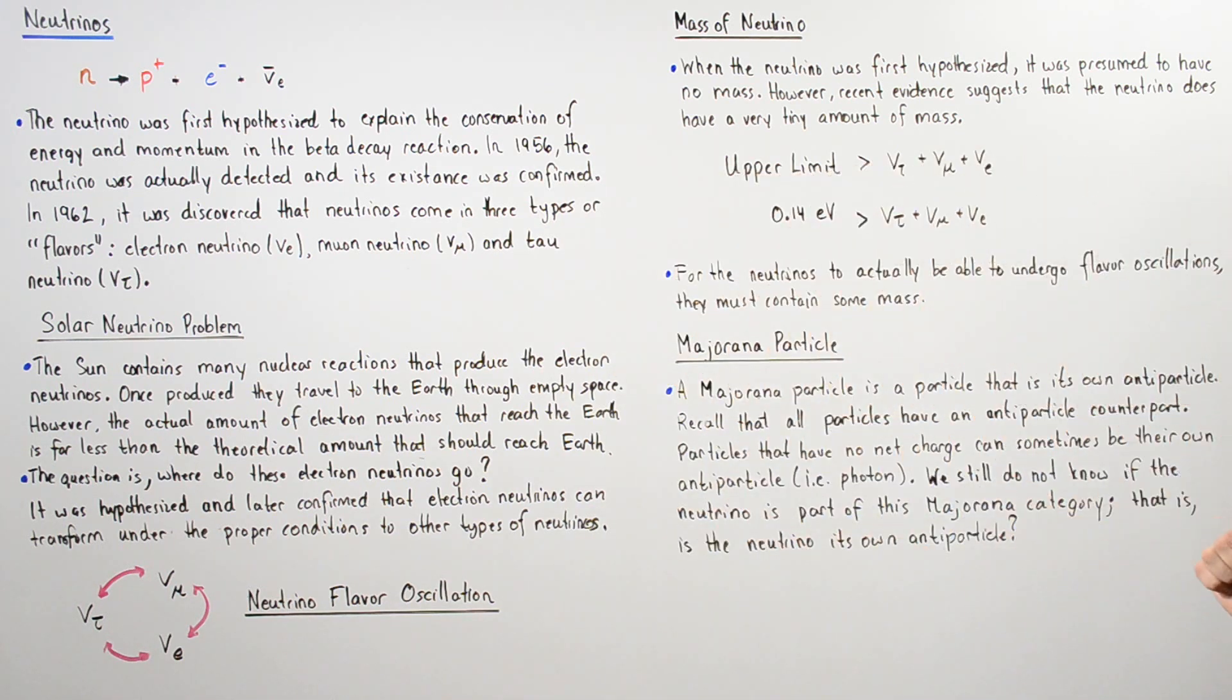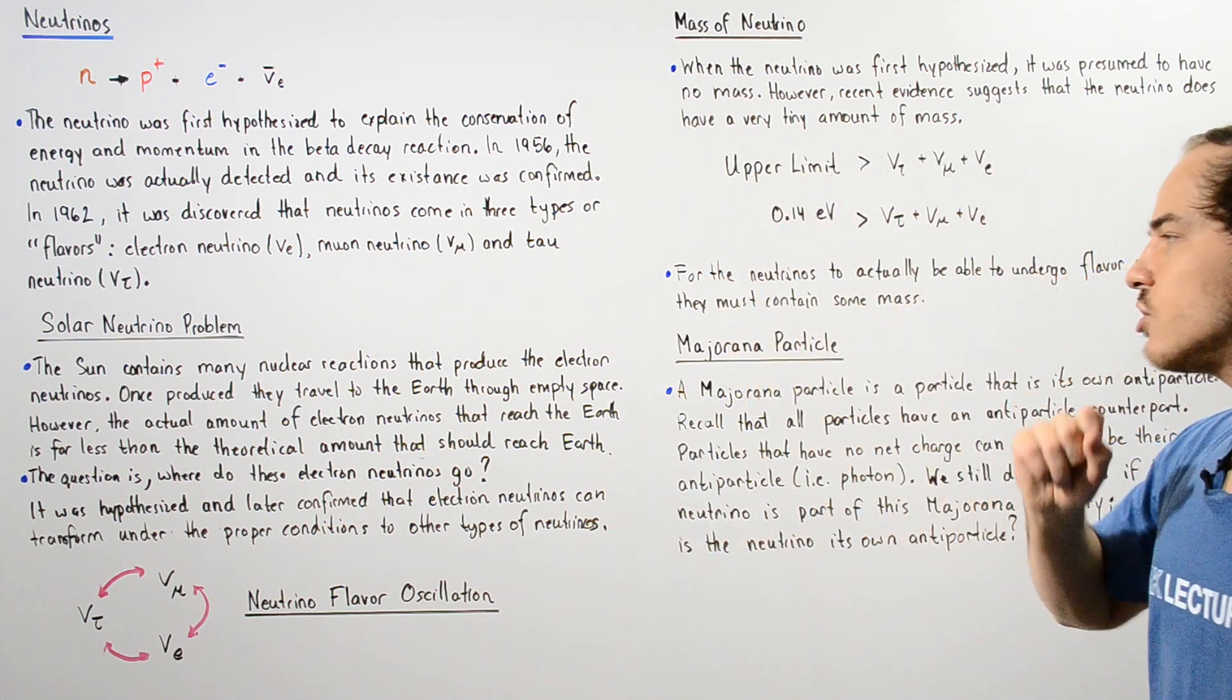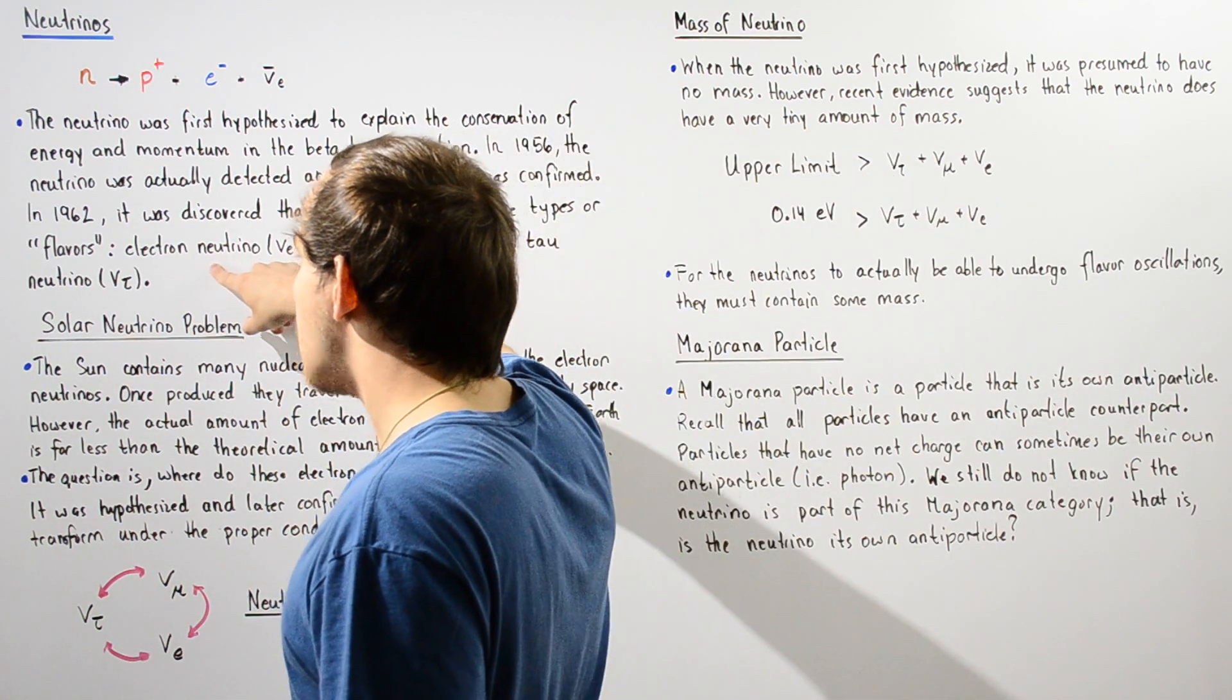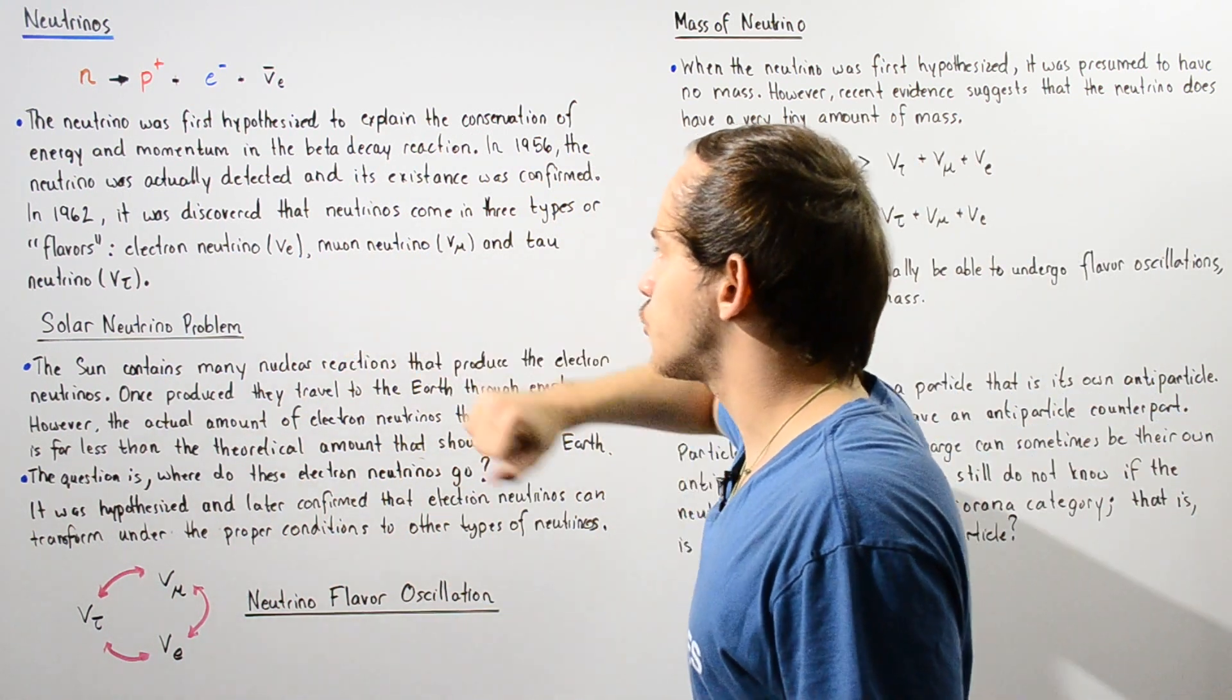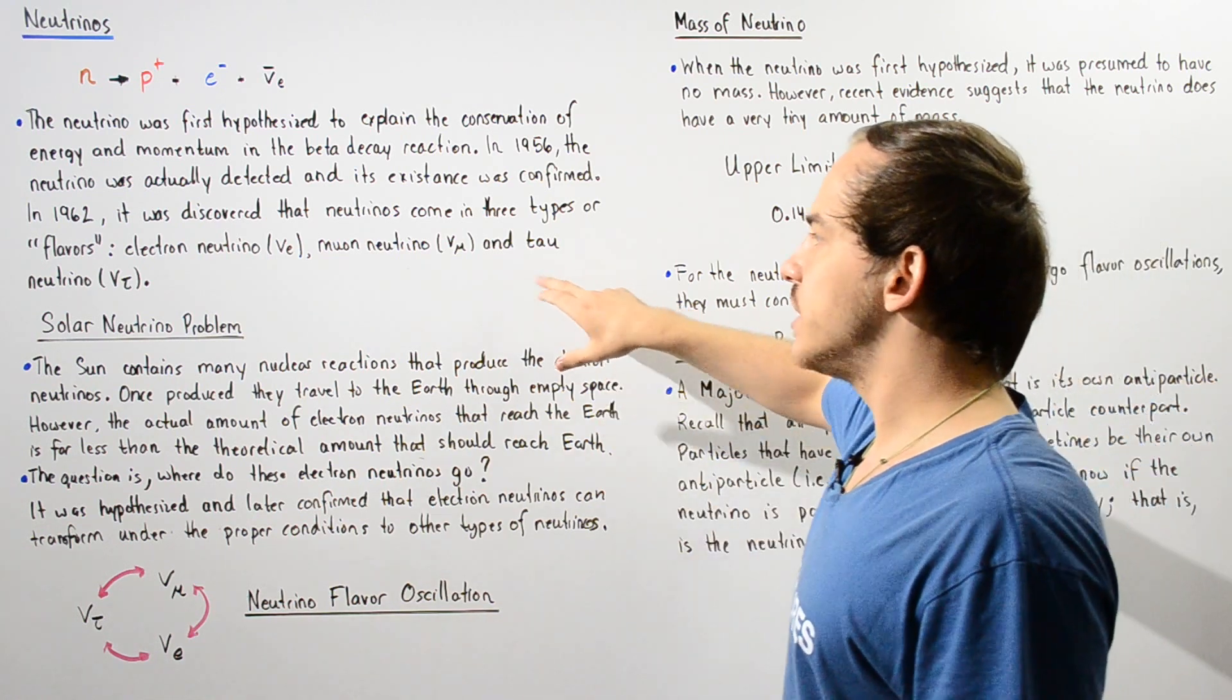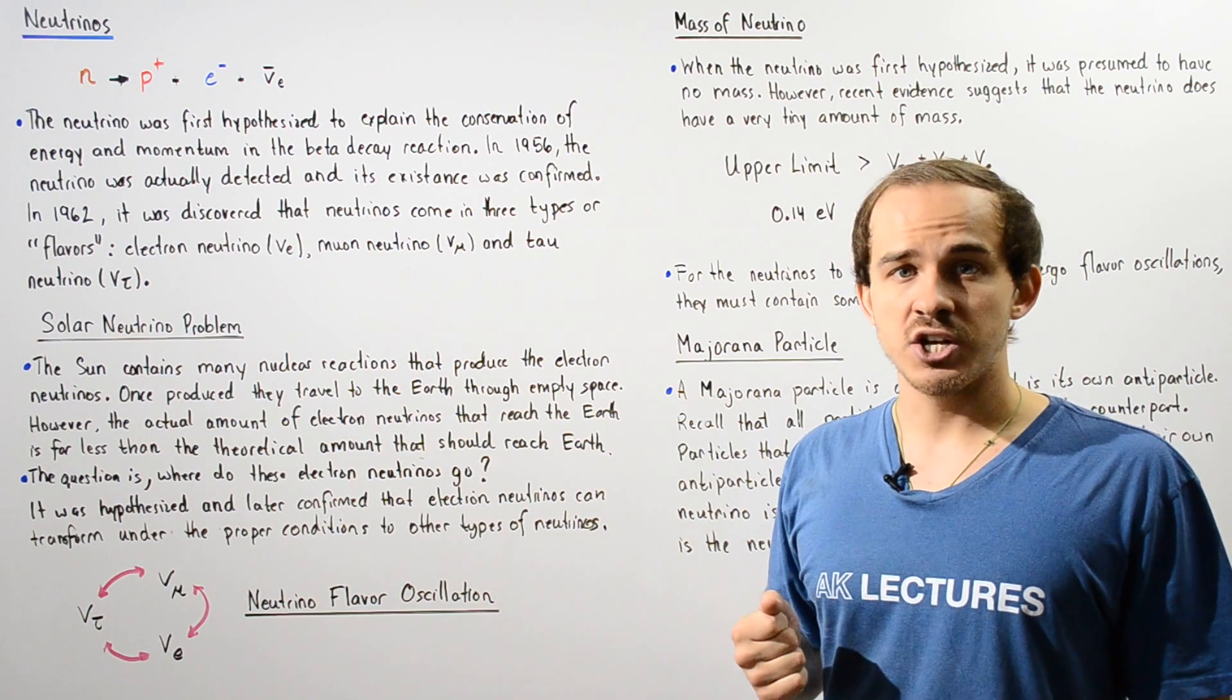Basically, we still do not know if the neutrino is part of this Majorana category. That is, is our neutrino its own antiparticle? If the neutrino is, in fact, a Majorana particle, that means the electron neutrino can act as its own electron antineutrino. The muon neutrino can act as its own muon antineutrino, and the tau neutrino can also act as its own tau antineutrino.